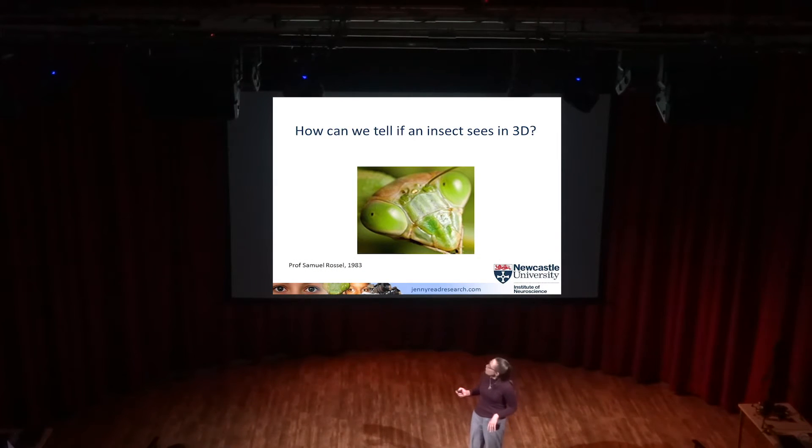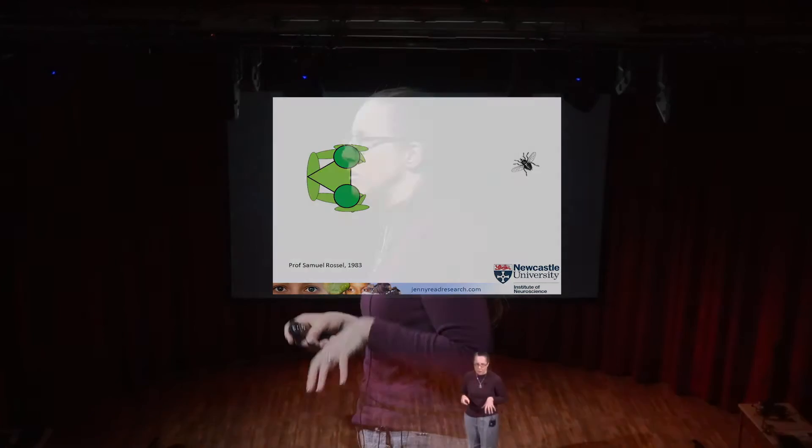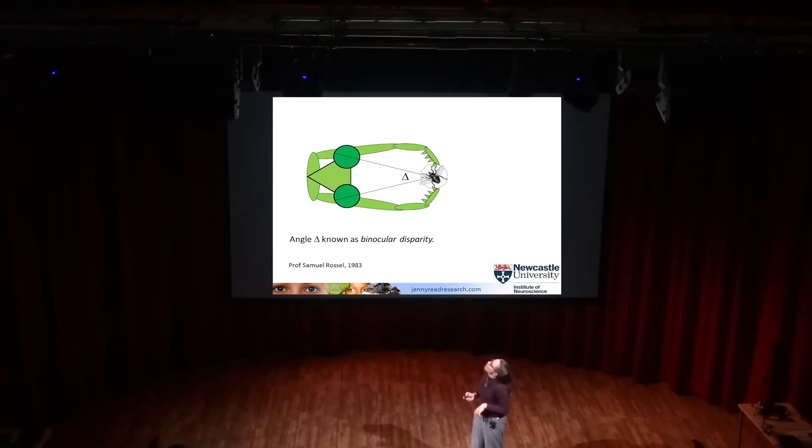How can you possibly say whether or not an insect has 3D vision? It was actually the work of Professor Samuel Rossall, in a series of papers beginning in 1983, using the behavior of mantises. Praying mantises are ambush predators - they lie in wait, very still, camouflaged, trying to look like a leaf, and when prey comes within their catch range they strike out with their spiky forelegs and grab it. Rossall had the idea that maybe they're using 3D vision to do that - triangulating using the fact that they have two eyes set far apart on their head.